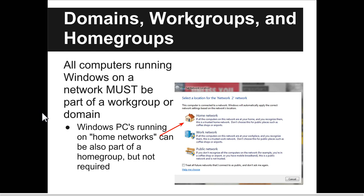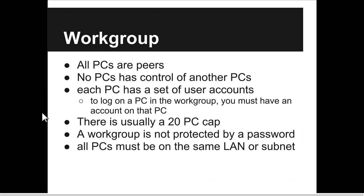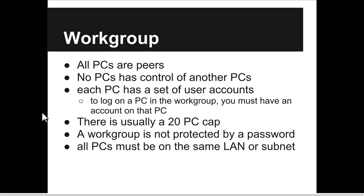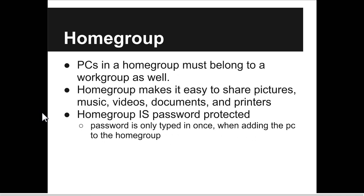All computers running Windows on any network must be part of a workgroup or domain. They can also be part of a home group but that's not required. In a workgroup, all PCs are peers — no PC has control of another, and to log on to a different PC you must have an account on that PC. A home group still requires membership in a workgroup. Its main purpose is easier sharing of pictures, music, videos, documents, and printers. Home groups are password protected; workgroups are not — but for home groups you only type the password once when first adding to the group.